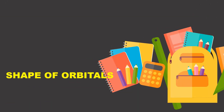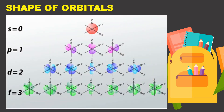Now we understand that electrons are both particles and waves. We are ready to learn how electrons are arranged in an atom. The location and energy of every electron in an atom is determined by a set of four quantum numbers that describes the atomic orbitals. An orbital is a region in space where most of the electrons are likely to be found. These are the S, P, D, and F orbitals with different shapes. These are not electrons — just regions in space where electrons can be found — and each one can hold up to two electrons.